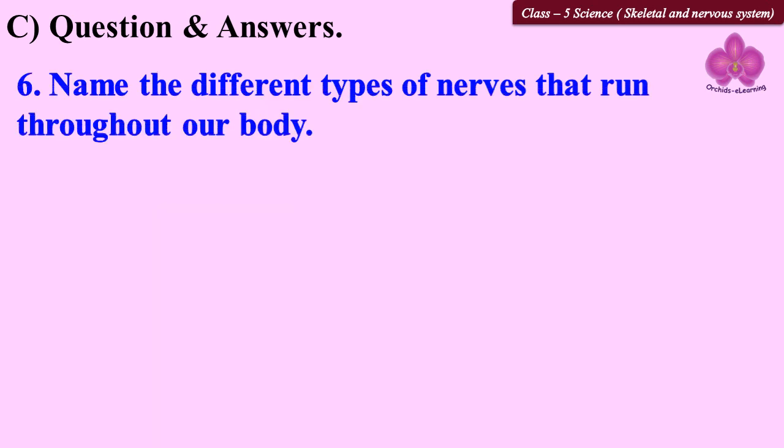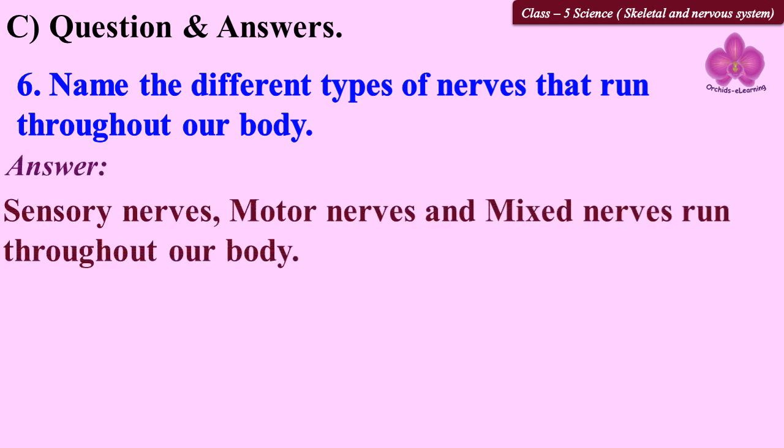Question 6: Name the different types of nerves that run throughout our body. Sensory nerves, motor nerves, and mixed nerves run throughout our body.